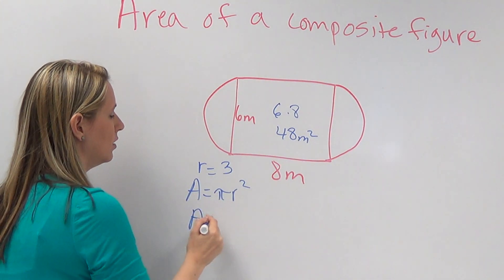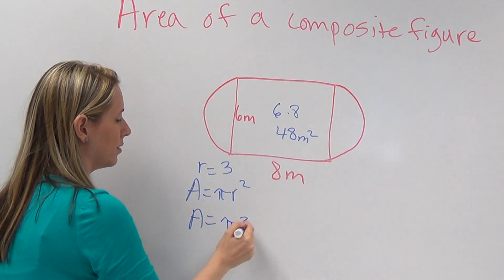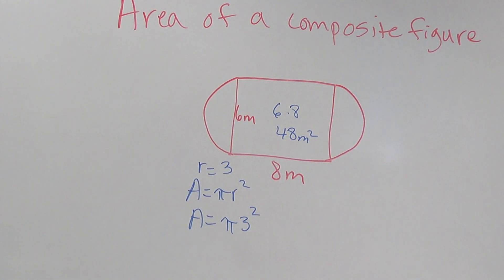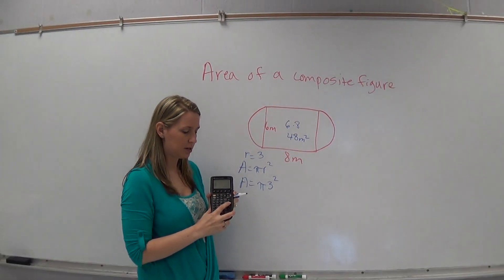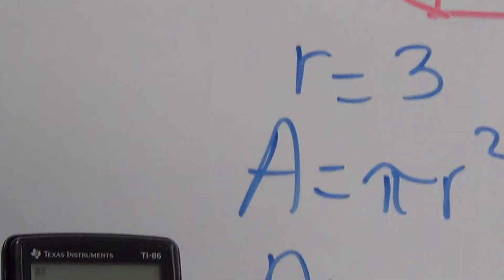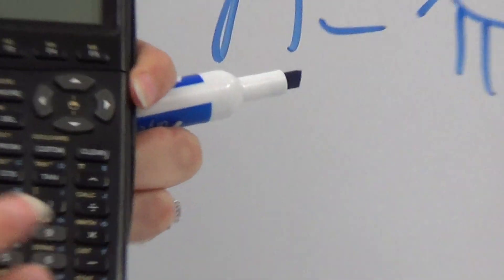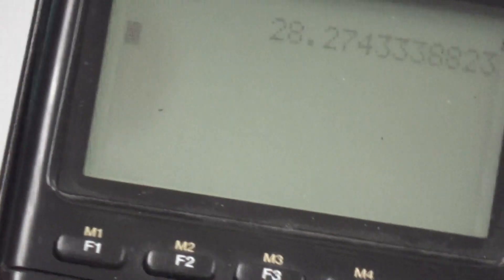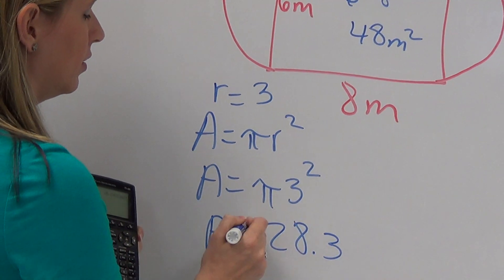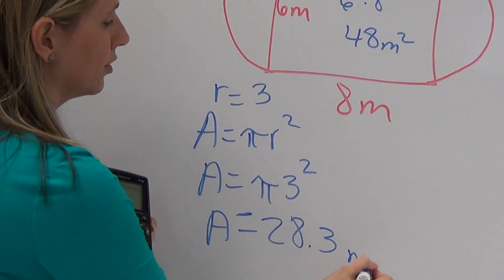So I just plug that in: pi times three squared. Our pi button is right above the housetop key, so we hit second then housetop. That gives us pi times the radius three squared. Hit enter, and that's going to be about 28.3 meters squared.